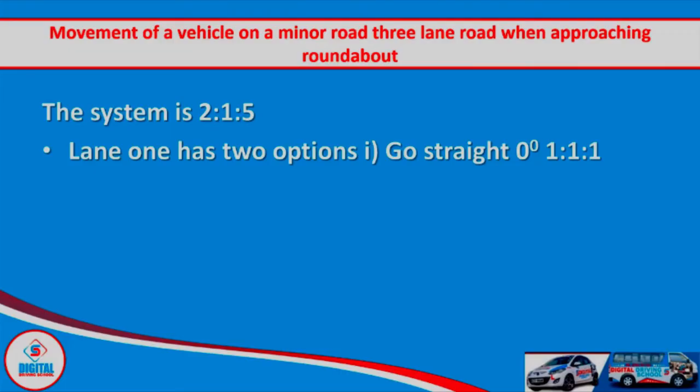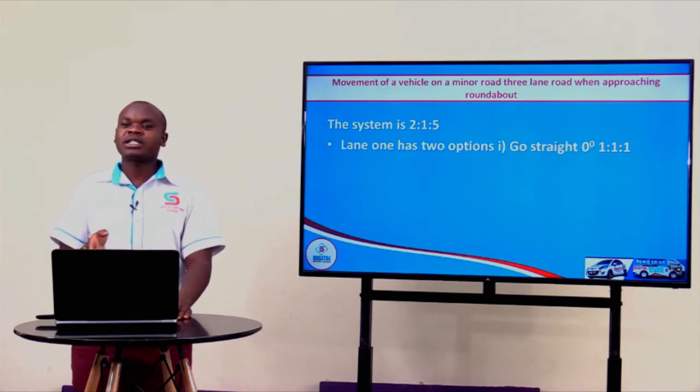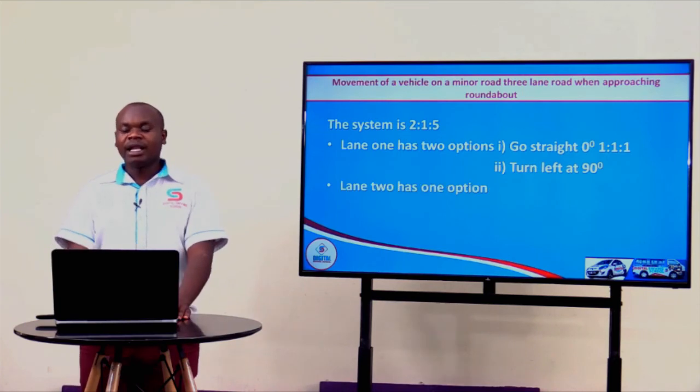Let's look at each individual lane. Lane one has two options. The first option is to go straight — stay on lane one, at the roundabout enter lane one, and exit using the same lane. The second option is to turn to your immediate left, exactly the same as in a major road. Lane two does not change from what we did in a major road — it only has one option, which means you go straight. Enter lane two, maintain that lane without changing, and exit at lane two.